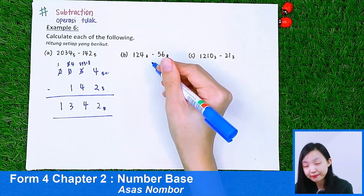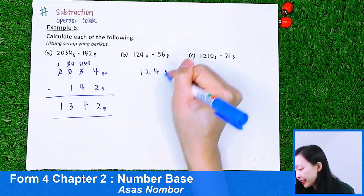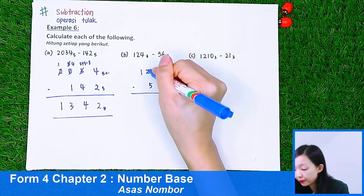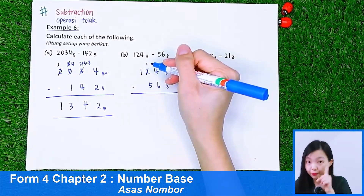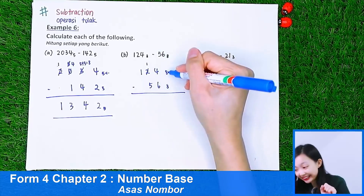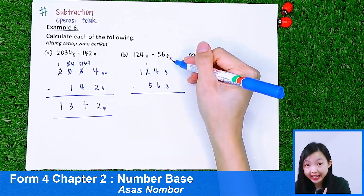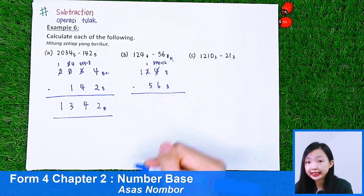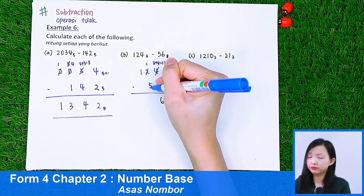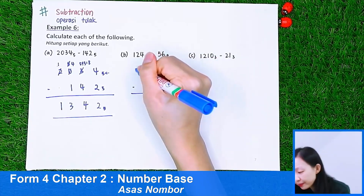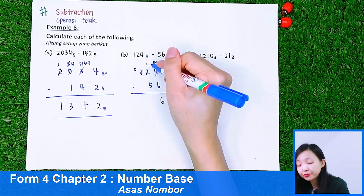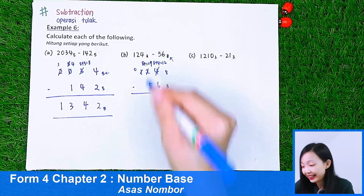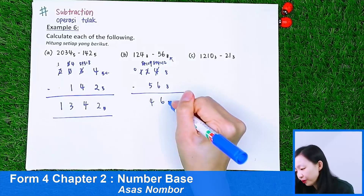Now part B: 1, 2, 4 in base 8 minus 5, 6 in base 8. 4 can't minus 6, so we borrow from 2 — it becomes 1. We borrow 8 to the 4, making it 12. 12 minus 6 is 6. Then 1 can't minus 5, so we borrow from the 1 — it becomes 0. We borrow 8 to this 1, making it 9. 9 minus 5 is 4. So the answer is 0, 4, 6 in base 8.